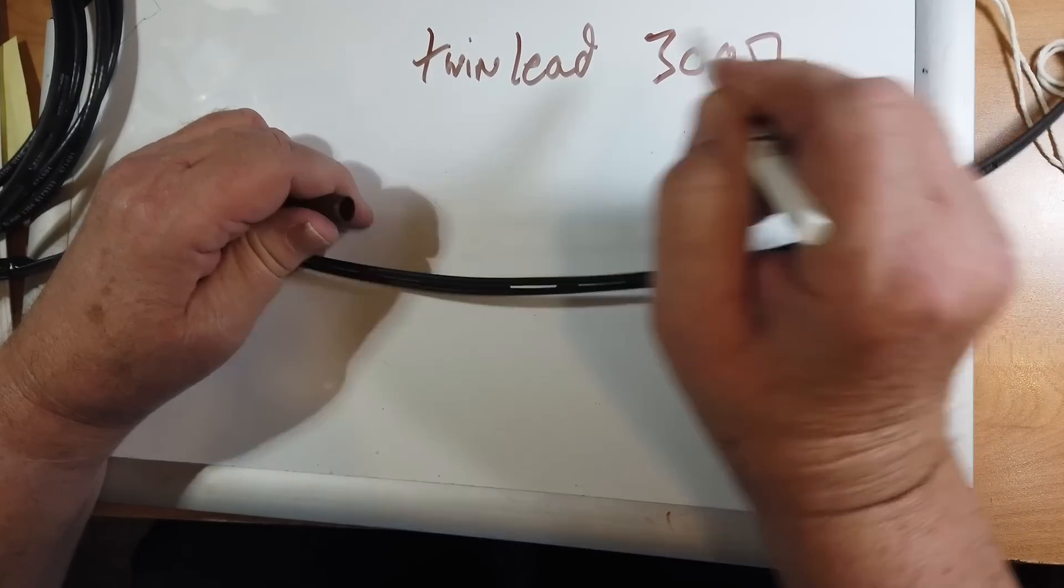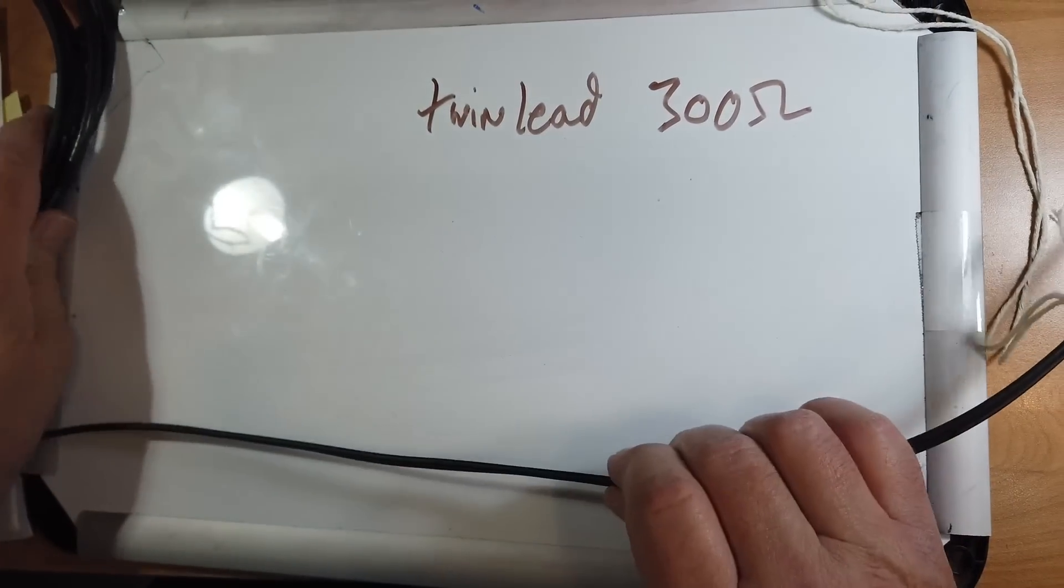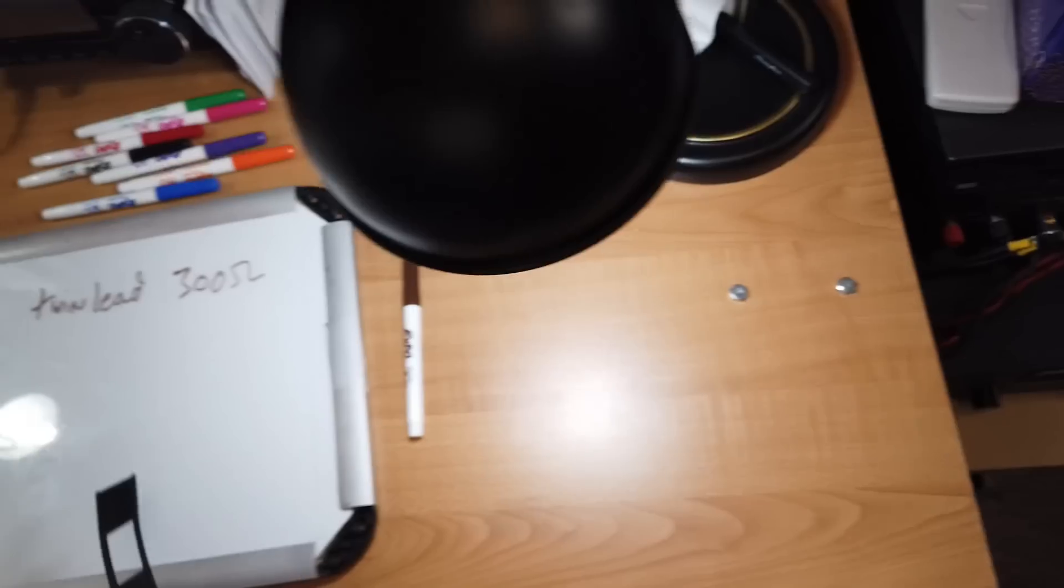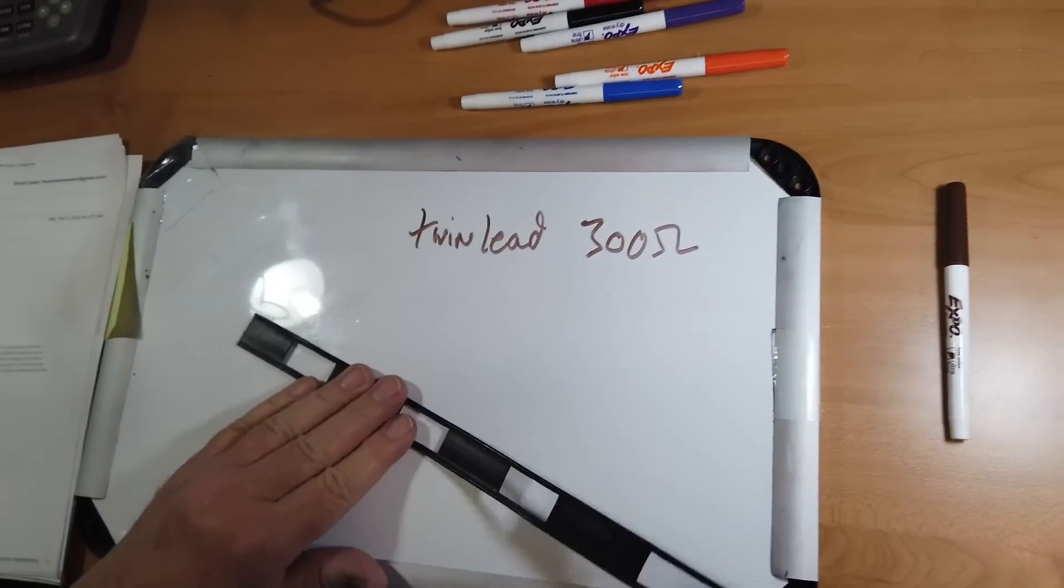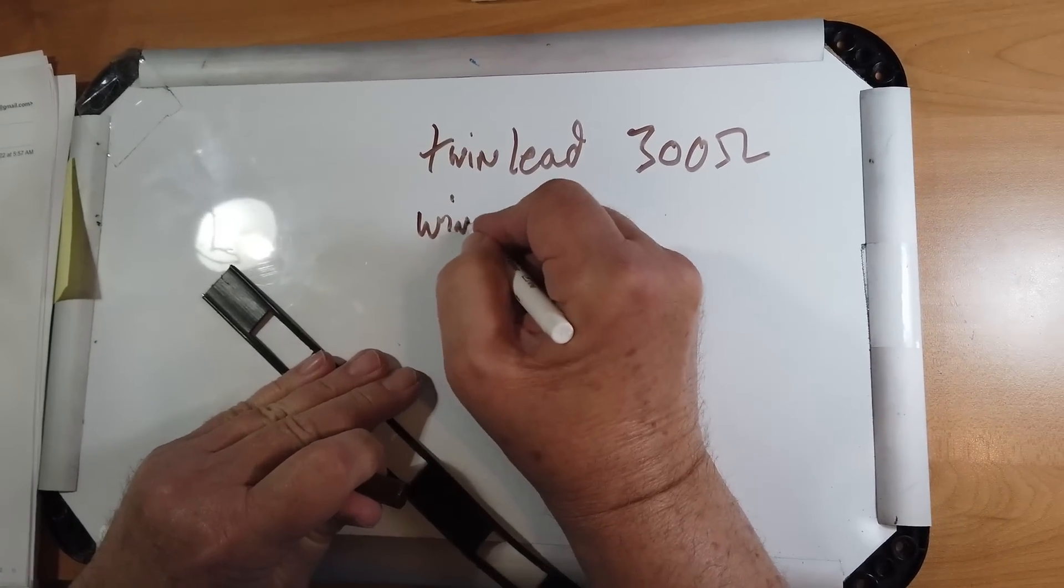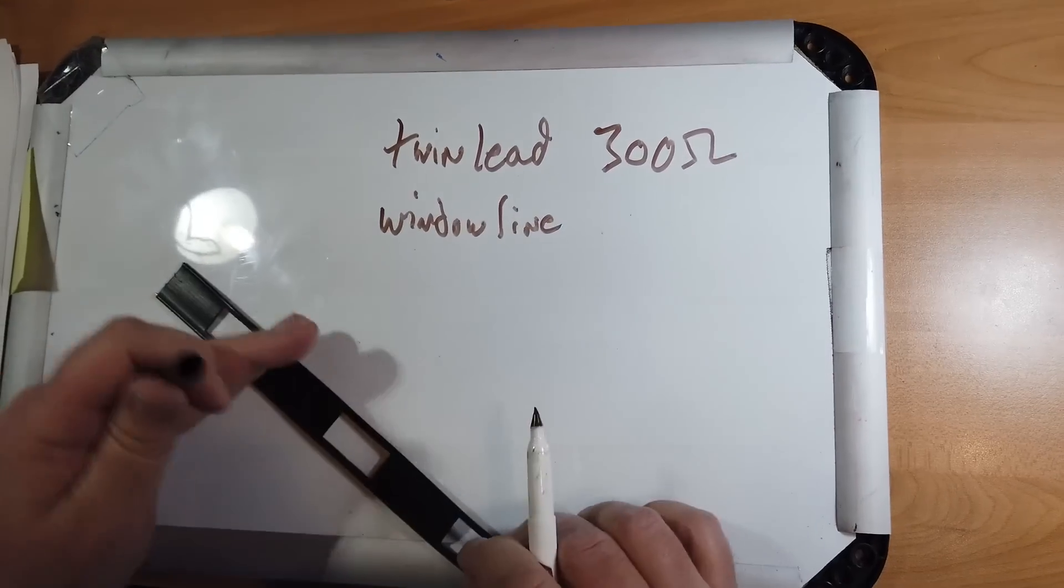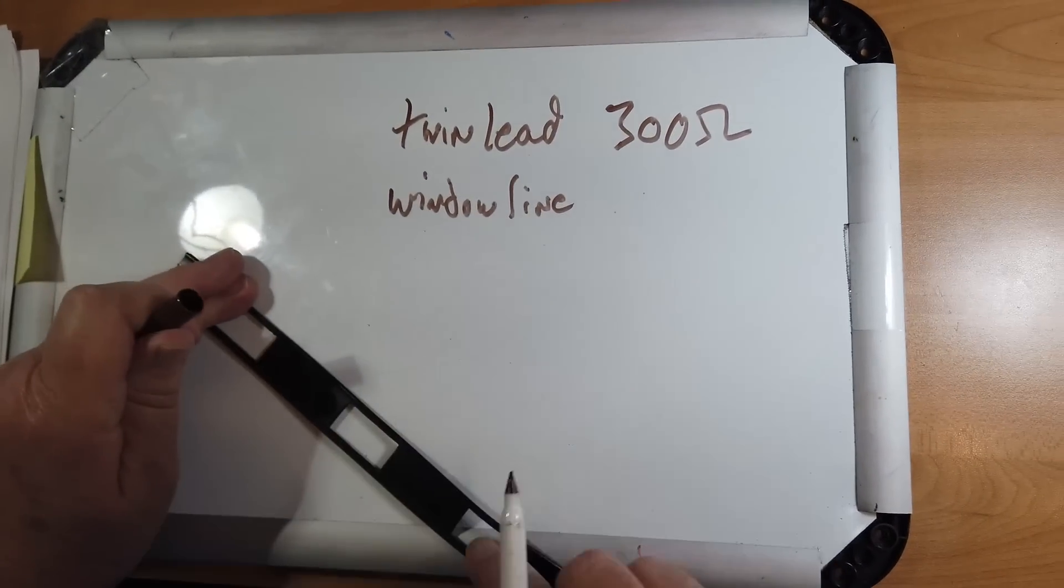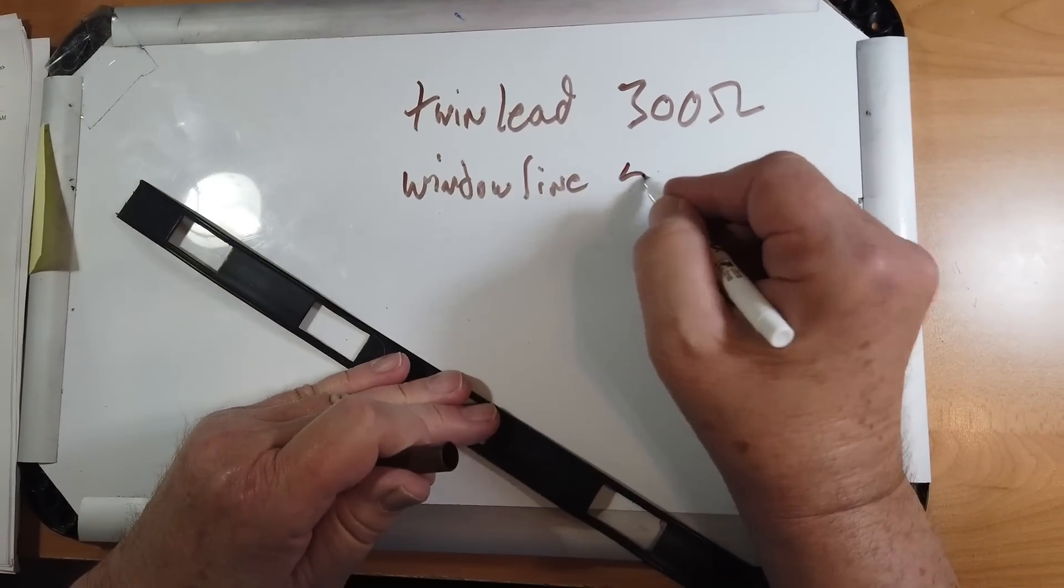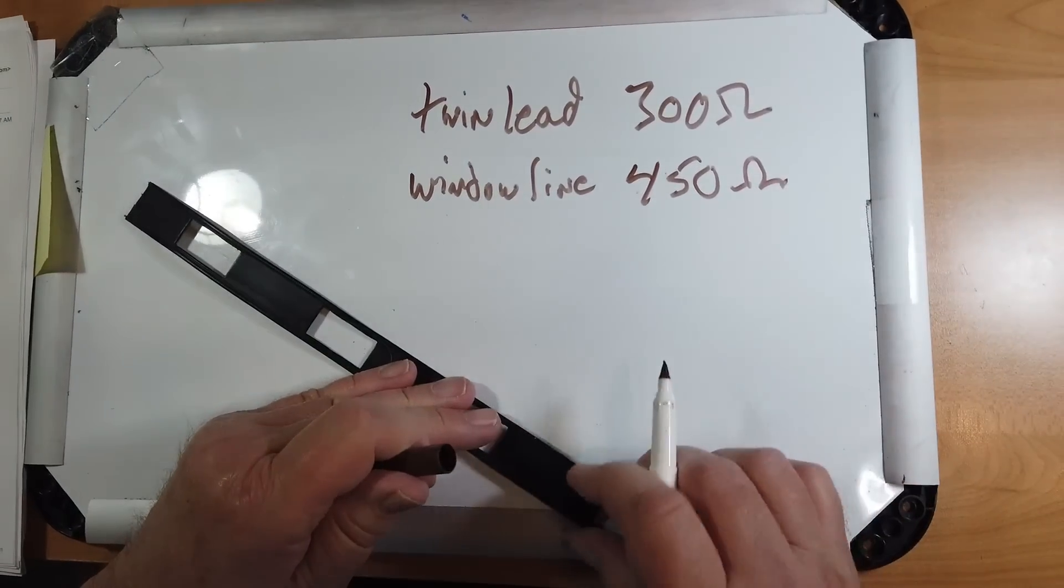We'll take a look at this, which is now what's called window line. So named because of all the chunks cut out here to reduce weight and reduce cost. It's 450 ohms characteristic impedance.